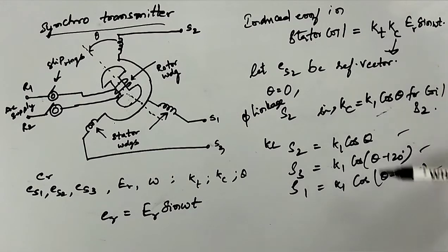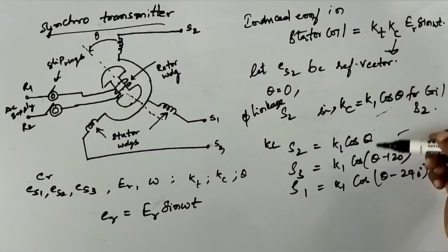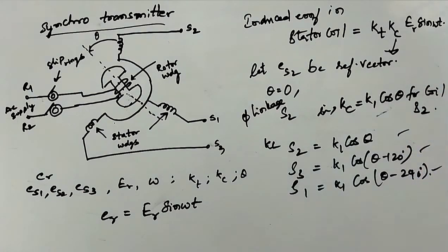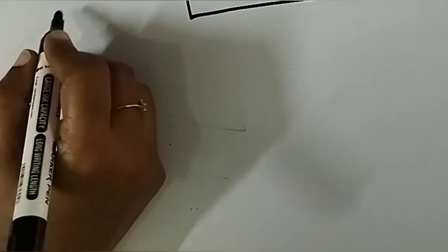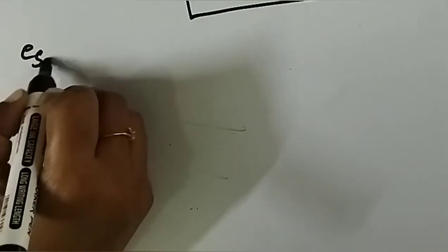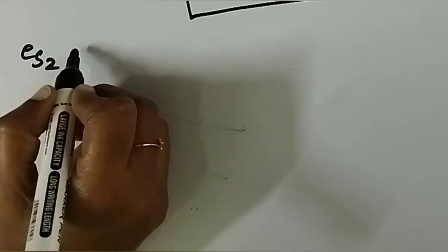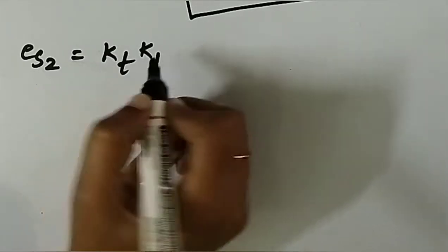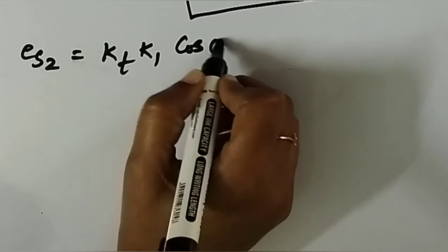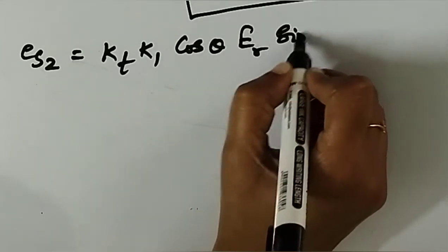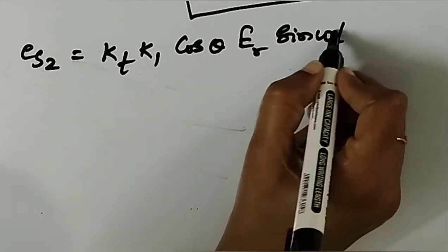With these values and the data above, we write expressions for the EMFs of the stator coils with respect to neutral. ES2 = KT × K1 × cos(theta) × ER × sin(ωt) = K × ER × cos(theta) × sin(ωt), where K = KT × K1.